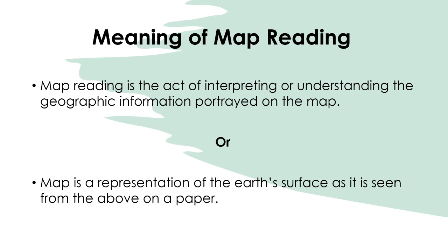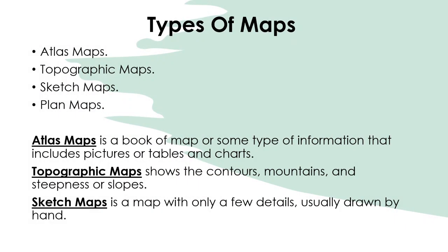Let's move on to types of maps. We have the atlas map, which is a book of maps. It includes pictures, tables, and charts. Atlases are also used by travelers — those that move from one point to another.